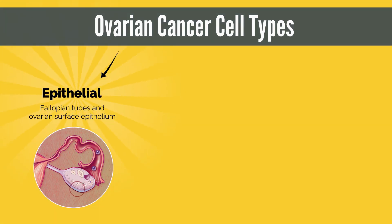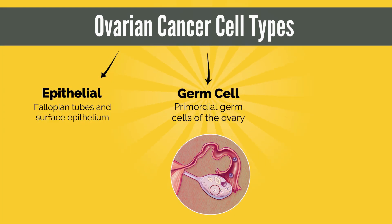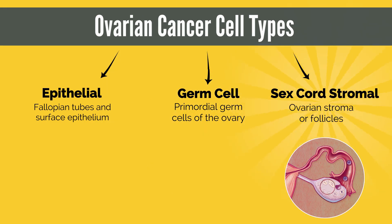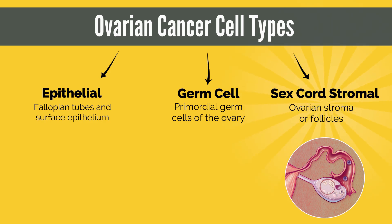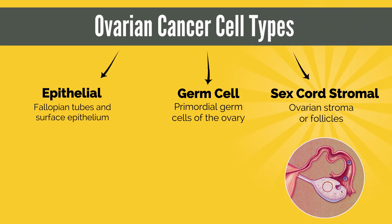The three main types include epithelial tumors, derived from stem cells that would give rise to the fallopian tube and ovarian surface epithelium. Next are the germ cell tumors, which are derived from the primordial germ cells of the ovary. Finally, sex cord stromal tumors are derived from stem cells that would otherwise create the ovarian stroma or follicles. Let's take each of these cell types in turn and discuss the different tumors they can create.